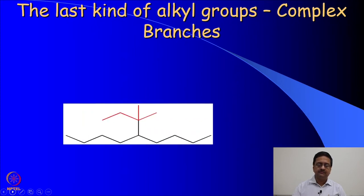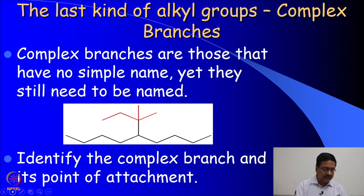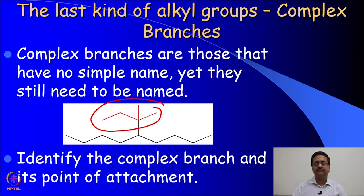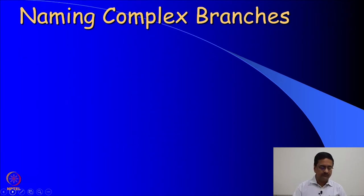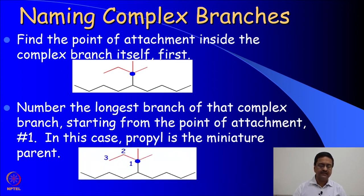Now we need to worry about a new type of branching: complex branches, which are those that have no simple name yet still need to be named in a molecule. In this particular case, the branch drawn in red is different from what we have seen before. We need to name this complex branch using a set of rules. When we try to do that, we need to find the point of attachment inside the complex branch itself.